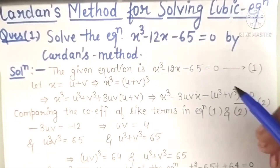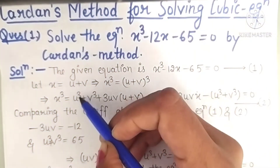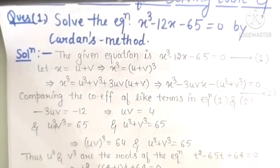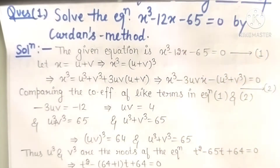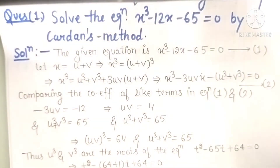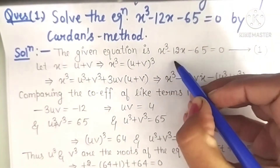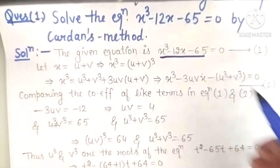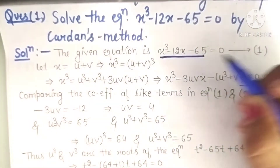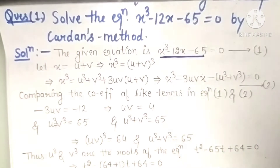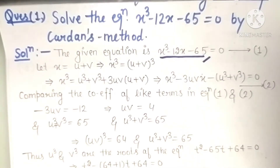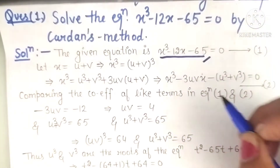In Cardan's method, we break the root into two portions in the form of u plus v. The first requirement is that the square term should not be present. My equation is x³ minus 12x minus 65. I have checked that there is no square term here, so I can start using Cardan's method.